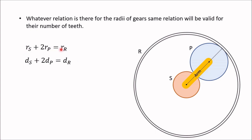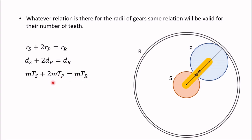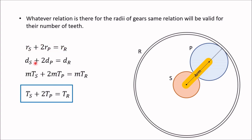Writing this in terms of diameter: D_sun + 2 × D_planet = D_ring. Since module m is the same for all three gears, we substitute D = m × T. So m × T_S + 2m × T_P = m × T_R. Cancelling m throughout, we get: T_S + 2T_P = T_R. This confirms that the same geometric relation holds in terms of number of teeth.